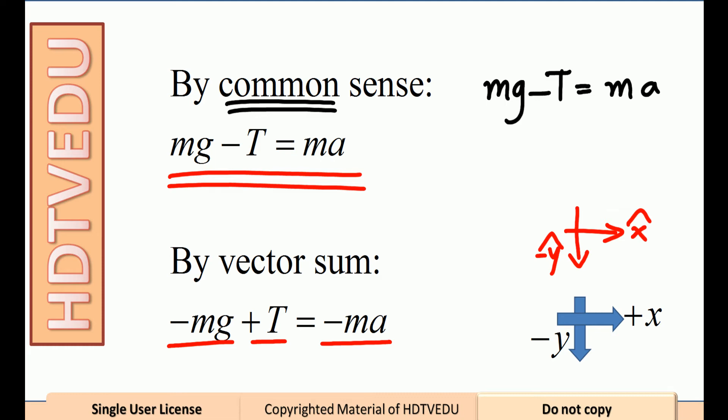And don't forget, these two are exactly the same. You multiply it throughout by negative 1. And what do we get? We get mg minus T equals ma, and that is the same as our first equation.